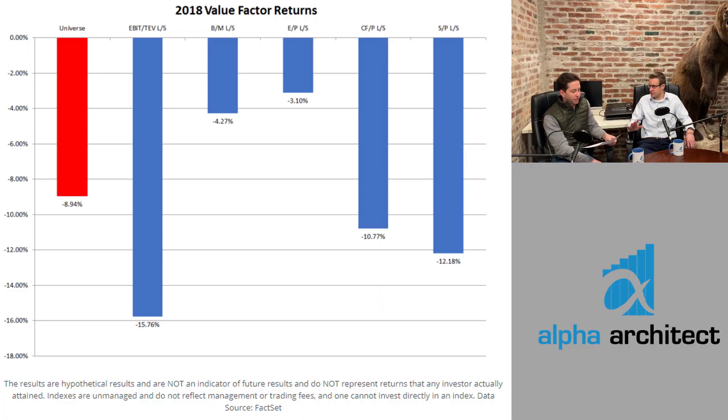What I did in this post was look specifically at the positions held in the ETF IWB — that's the Russell 1000, which tracks the 1,000 largest firms generally. The first thing I did was try to look at how value did. I split all of the holdings — if you had 1,000 — I put them into 10 buckets on each measure. First I did value.